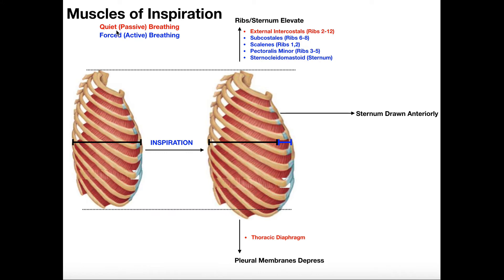Quiet breathing is what you're doing when you're sitting on your couch. You're not exerting yourself; you don't even think about breathing. Forced breathing is something that you do when you're exercising, hyperventilating, or having a panic attack. Or for example, when you go to the doctor's office and they put a stethoscope on your back and ask you to take a deep breath — obviously there you're breathing with a lot more force.